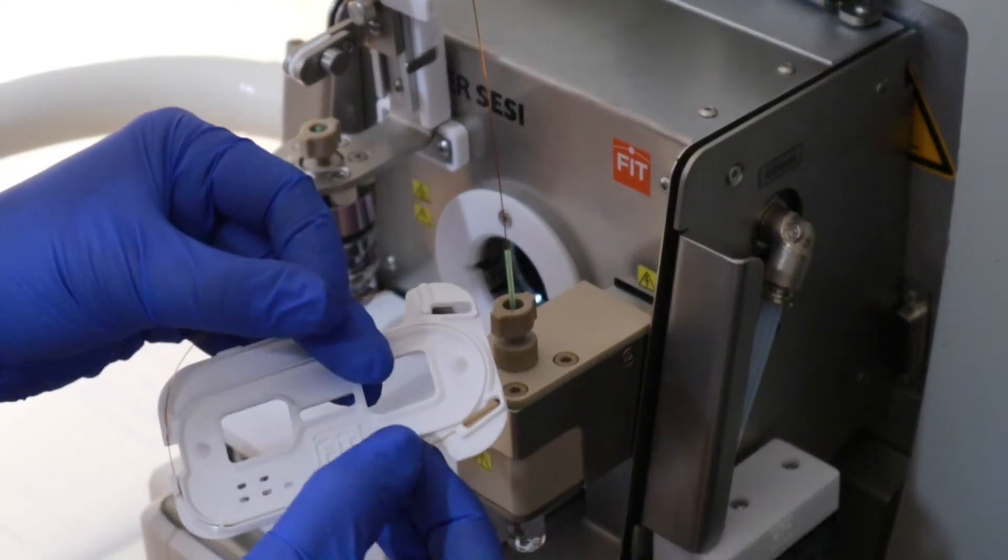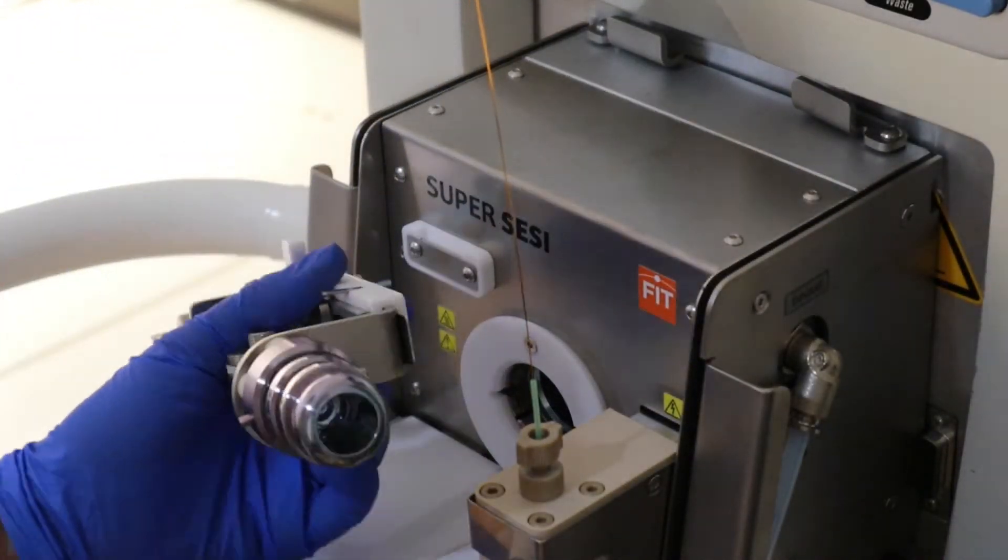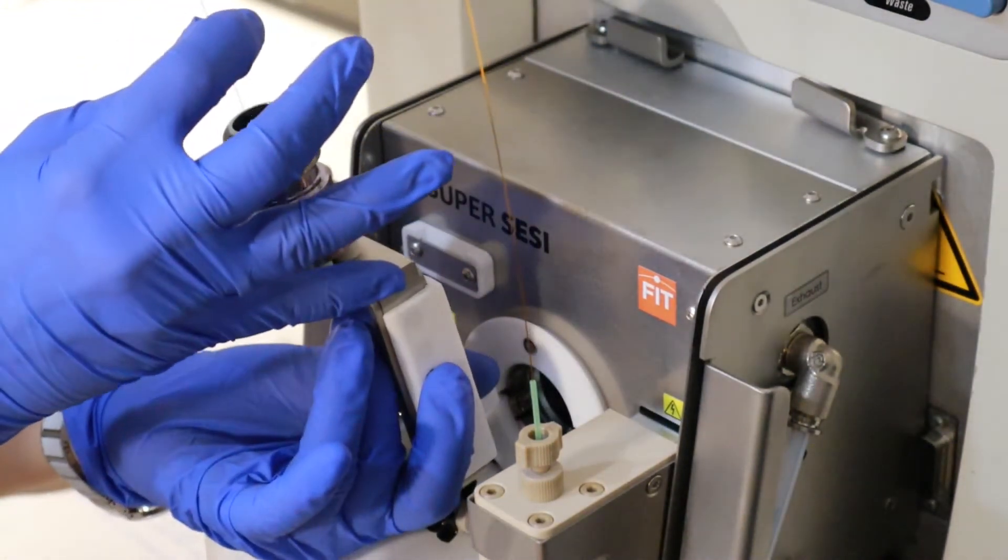Make sure that the tip and the back of the emitter do not touch anything. You will have to introduce the back of the emitter through the sleeve in the probe. The sleeve is small, so take your time.